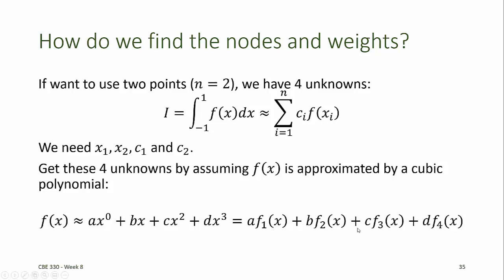Now, we rewrite each power of x as a function. f1 is the x to the zero term, f2(x) is the x term, f3(x) is the x squared term, and f4(x) is the x cubed term. Each of these is multiplied by a coefficient, a through d.